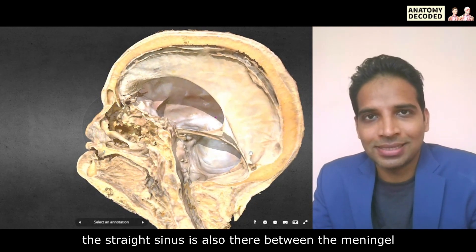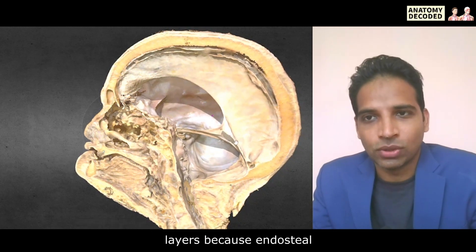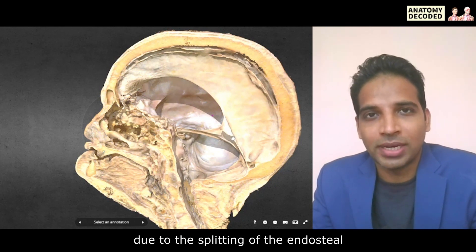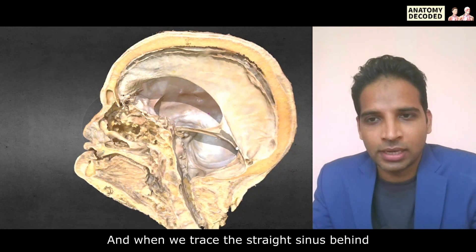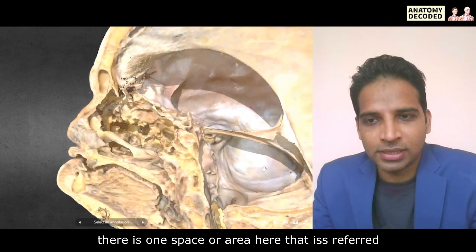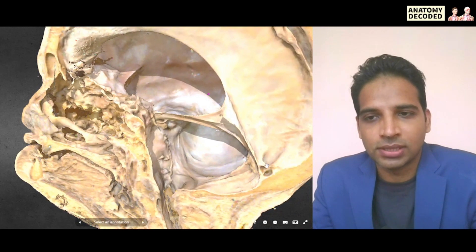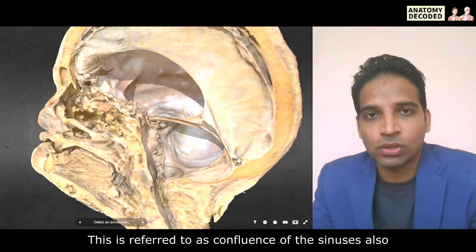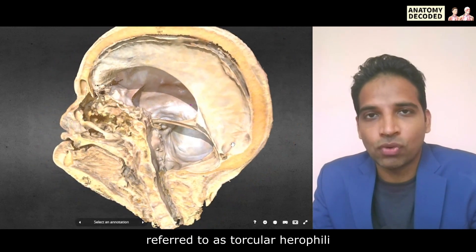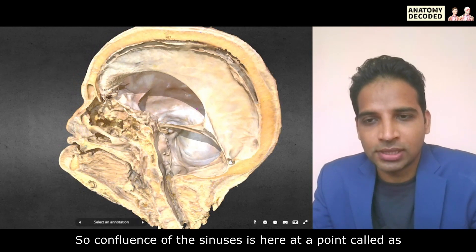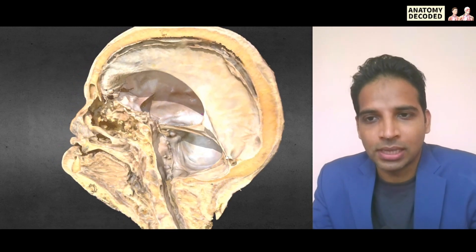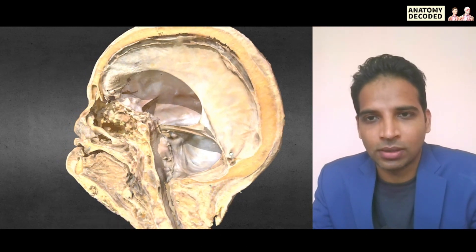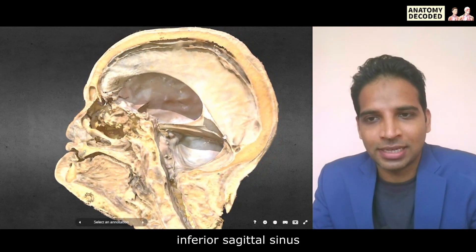The straight sinus is also between the meningeal layers, since the endosteal layer cannot reach that point. So except for the inferior sagittal sinus and the straight sinus, all remaining dural venous sinuses are due to the splitting of the endosteal and meningeal layers. When we trace the straight sinus behind, there is an area referred to as the confluence of the sinuses, where the straight sinus, occipital sinus, and superior sagittal sinus all meet. This is also referred to as torcular herophili, located at a point called the internal occipital protuberance.